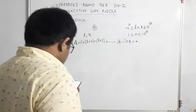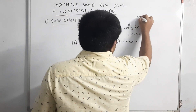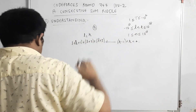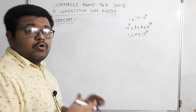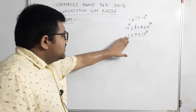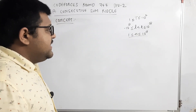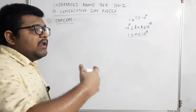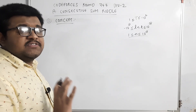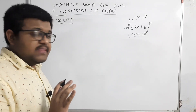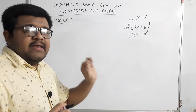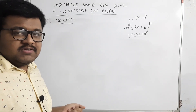Kaafi simple question hai. Test cases 10^4 se kam hain. Ab constraints dekhein toh n ki value 10^18 tak hai, toh hum har ek l aur r ki pair ko compare karke check nahin kar sakte ki yeh satisfy kar rahe hain ya nahin — time limit exceed ho jaayegi. Iska matlab humein kuch aisa logic use karna padega ki n ki value dekhkar ek step mein answer mil jaaye.